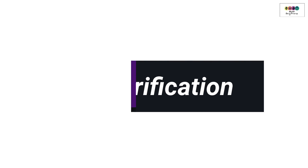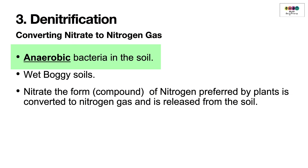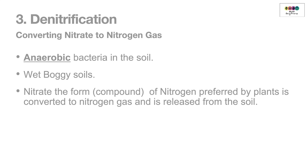The final stage in the nitrogen cycle is denitrification — converting nitrate back to nitrogen gas and releasing it to the atmosphere. This is carried out by anaerobic bacteria found in wet, boggy soils. When farmland floods, it facilitates these anaerobic bacteria, which denitrify the soil and remove all the nitrate, releasing it as nitrogen gas.